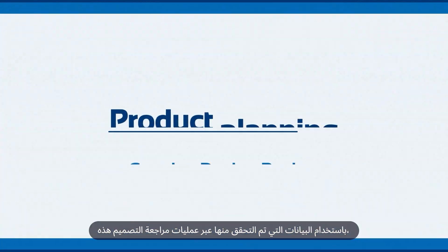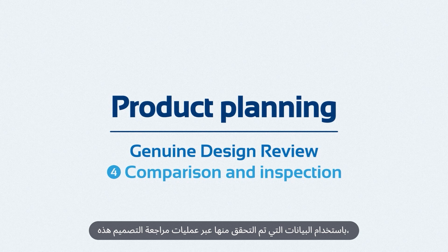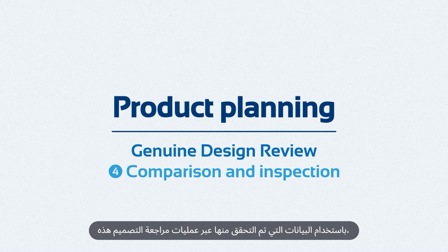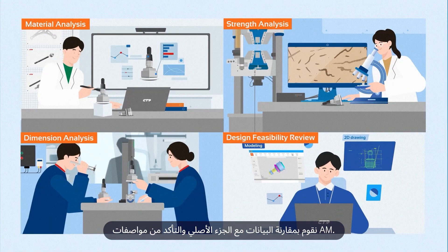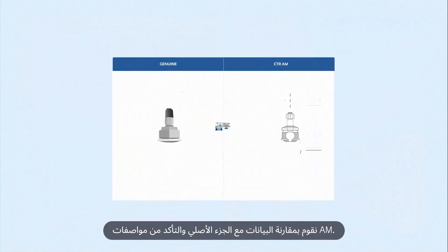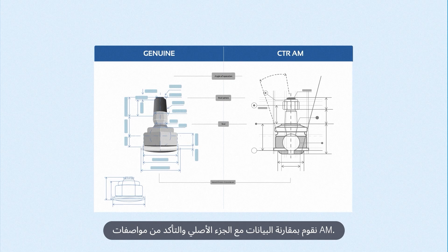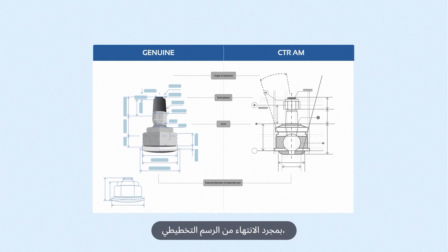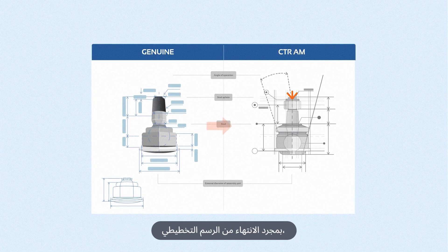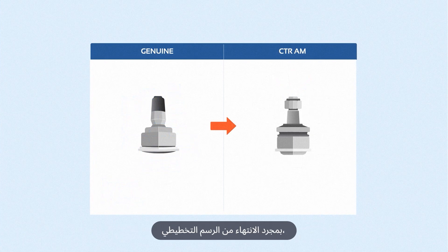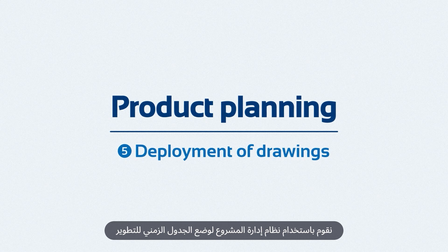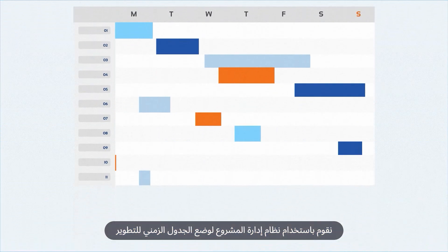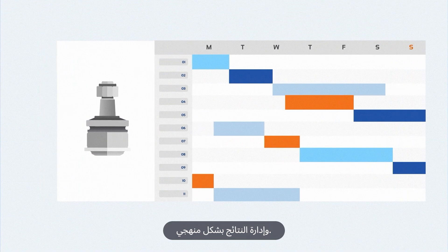Using the data verified through these design review processes, we compare the data with the genuine part and confirm the AM specification. Once the schematic diagram is done, we use a project management system to set the development schedule and systematically manage the results.